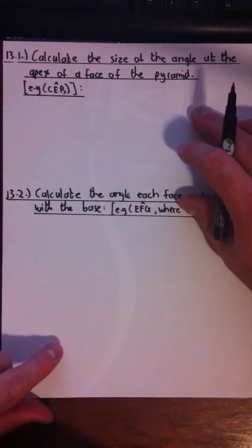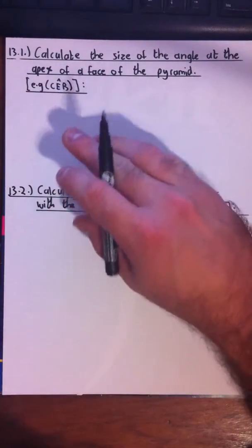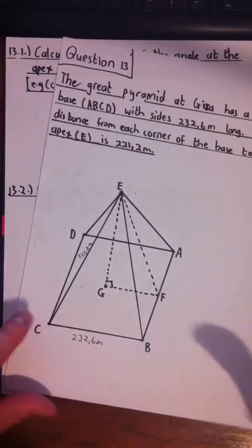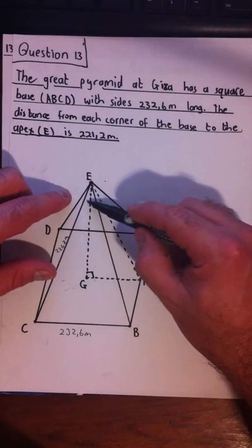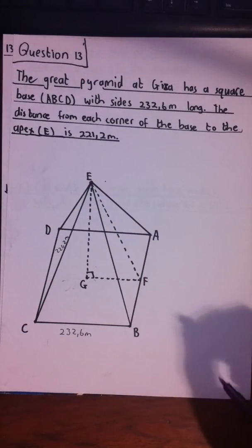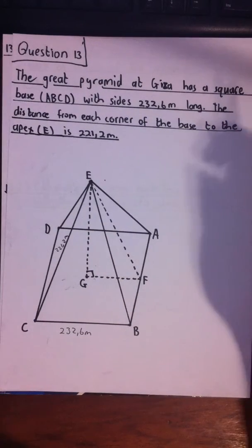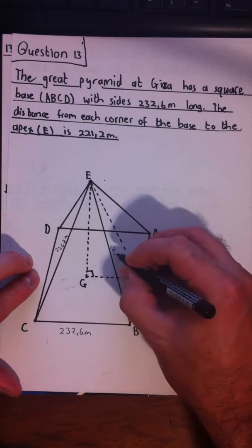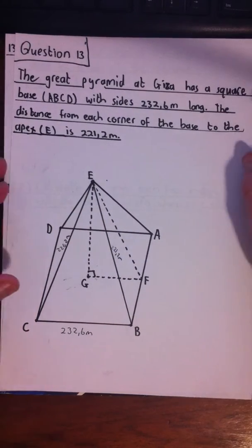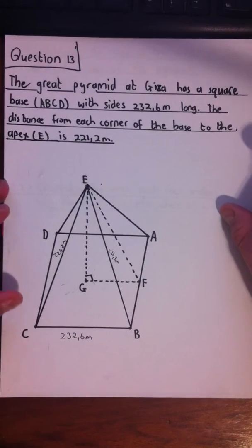Calculate the size of the angle at the apex of a face of the pyramid — for example, angle CEB. That's the type of angle they want us to calculate. We don't know this angle, this angle, or that angle, but we know all the sides, because this side is also 221.2 meters. So we can use the cosine rule.